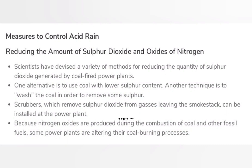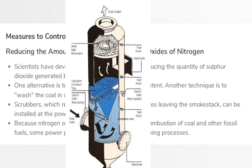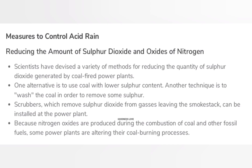Measures to control acid rain include reducing the amount of sulfur dioxide and oxides of nitrogen. Scientists have devised a variety of methods for reducing the quantity of sulfur dioxide generated by coal-fired power plants. One alternative is to use coal with lower sulfur content. Another technique is to wash the coal in order to remove some sulfur. Scrubbers, which remove sulfur dioxide from gases leaving the smokestack, can be installed at the power plant. Because nitrogen oxides are produced during the combustion of coal and other fossil fuels, some power plants are altering their coal-burning processes.